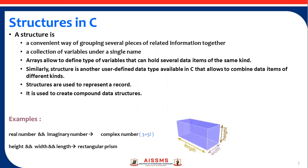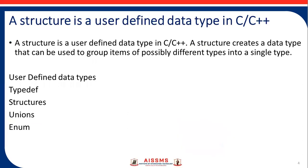First of all, structure in C. A structure is a convenient way of grouping several pieces of related information together — a collection of variables under a single name. Arrays allow defining a type of variable that can hold several data items of the same kind. Similarly, structure is another user-defined data type available in C that allows combining data items of different kinds. Structures are used to represent a record and to create a compound data structure. For example, real number and imaginary number make a complex number; height, width, and length make a rectangular prism. User-defined data types include type, struct, union, and enum.